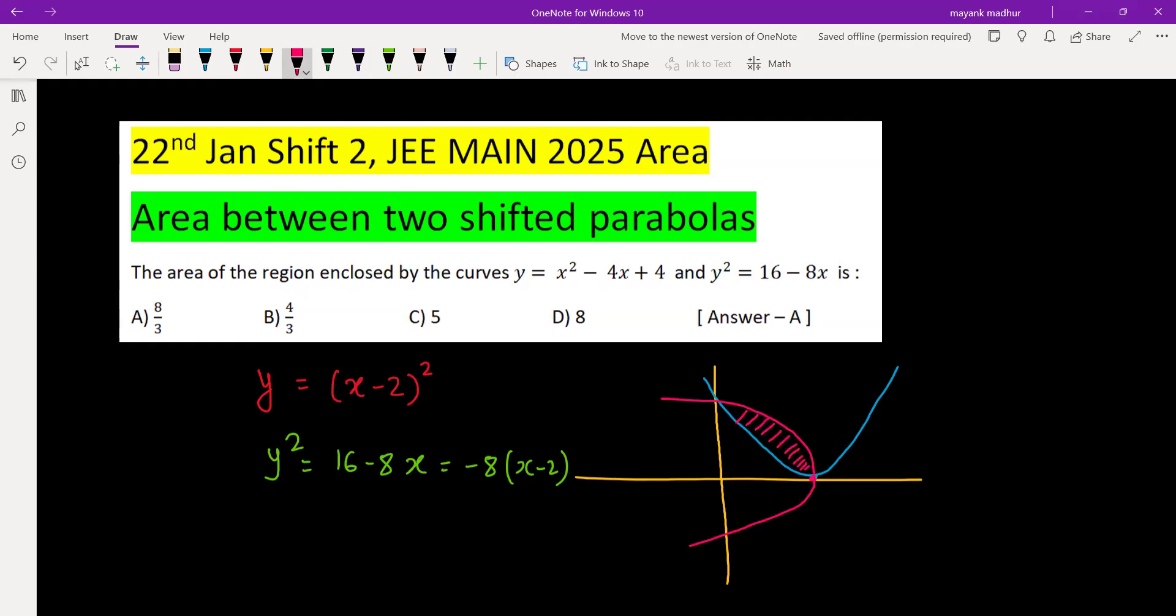So we need to first solve them for what value of x they are intersecting. The value of x minus 2 from here is y square by negative 8 from here, and then we'll substitute the value in the first equation.